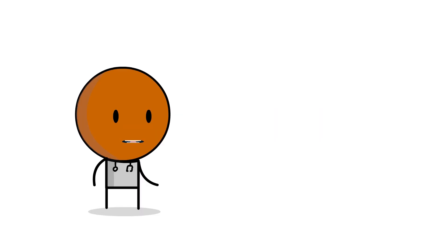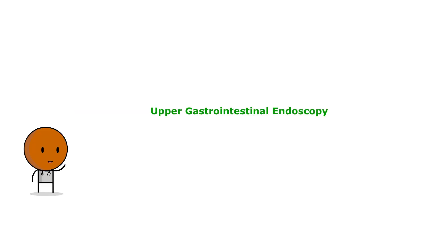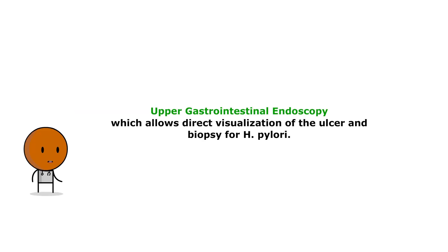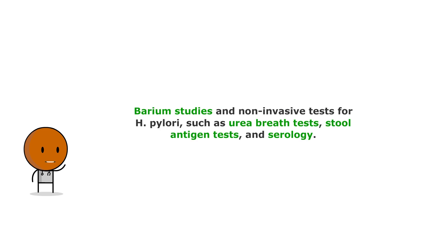But how do we diagnose peptic ulcer disease? The diagnosis is typically confirmed through upper gastrointestinal endoscopy, which allows direct visualization of the ulcer and biopsy for H. pylori. Other diagnostic methods include barium studies and non-invasive tests for H. pylori, such as urea breath tests, stool antigen tests, and serology.